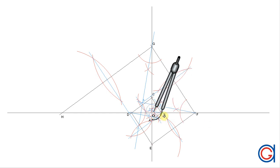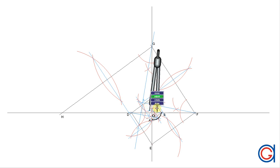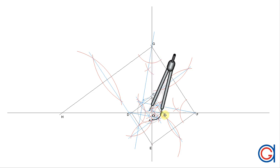Setting the compass on point 1 and radius 1A, we scribe an arc until it cuts point B, as shown here. Then setting the compass on point 2 and radius 2B, we scribe an arc until it cuts point C.